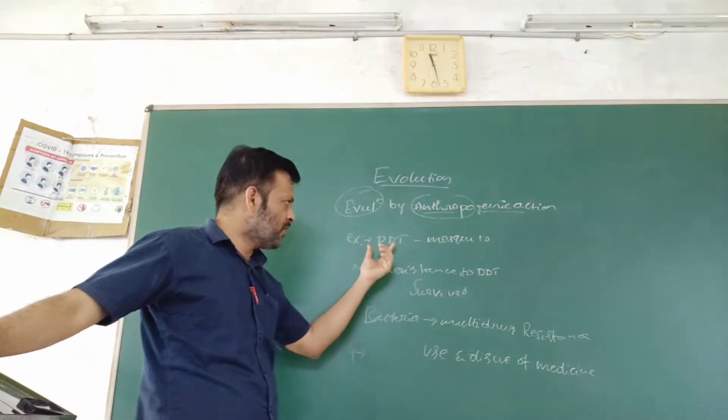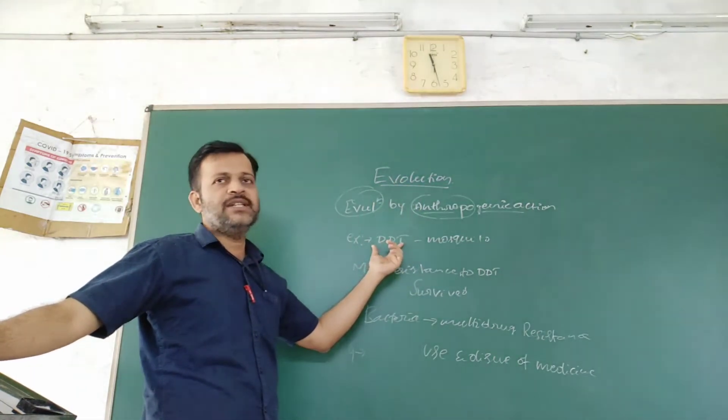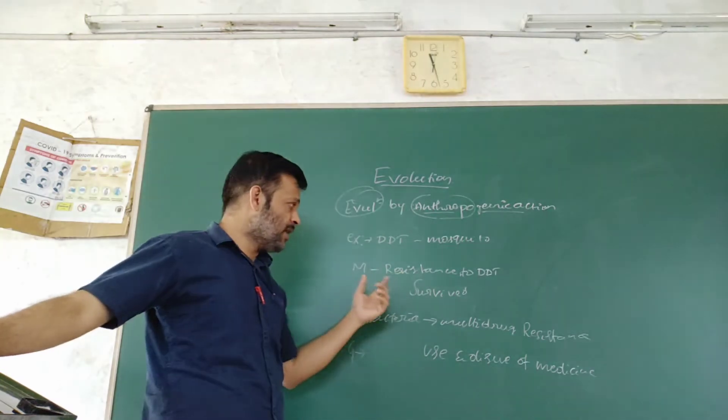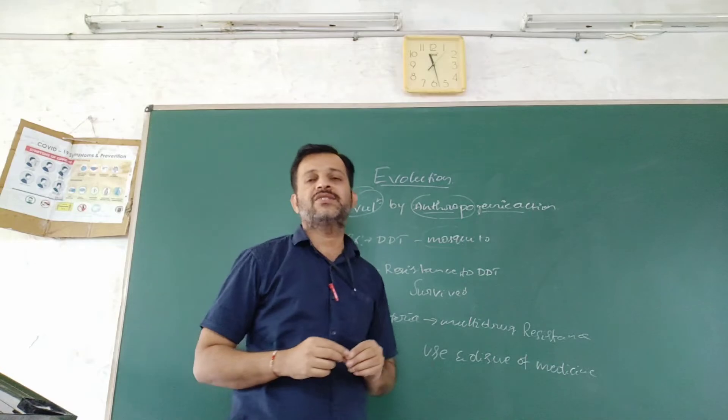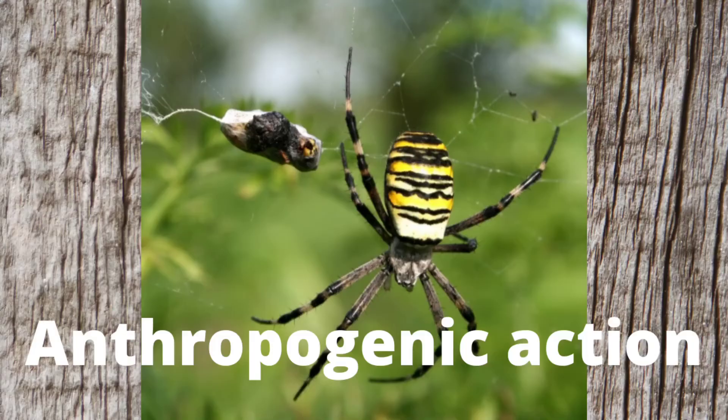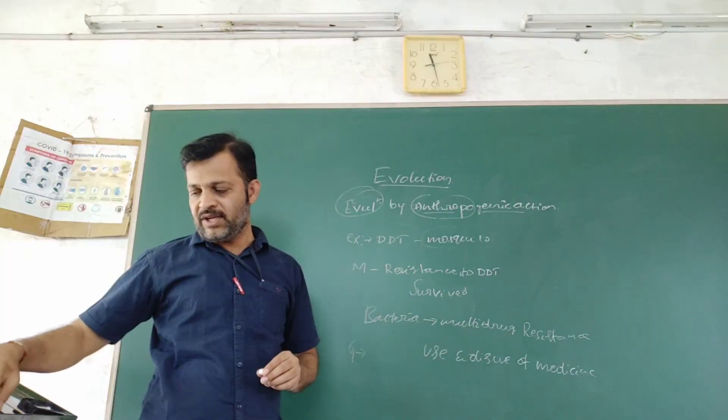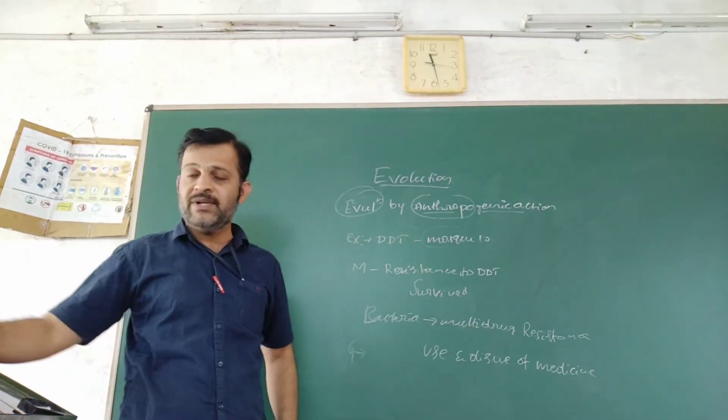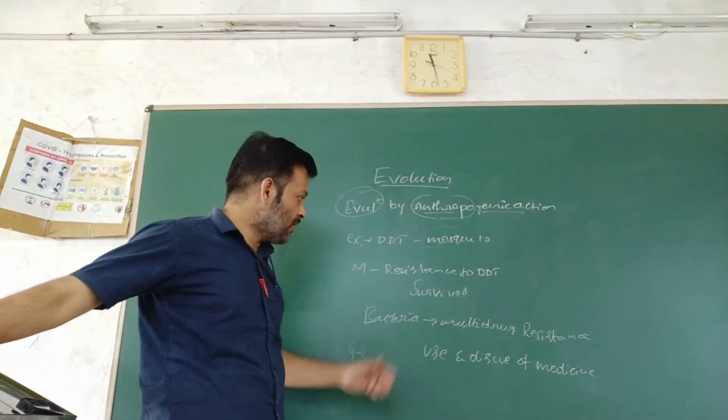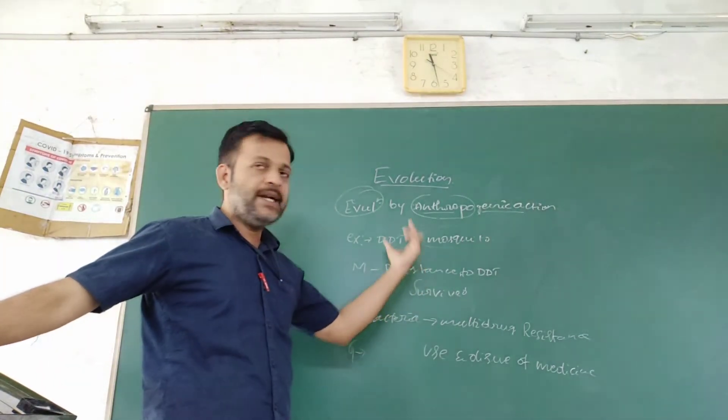The mosquitoes are killed and controlled by DDT. Later on, what happens is that generations of mosquitoes start developing resistance to the particular DDT. This happens in nature over several years. Over several generations, organisms adjust and develop resistance.